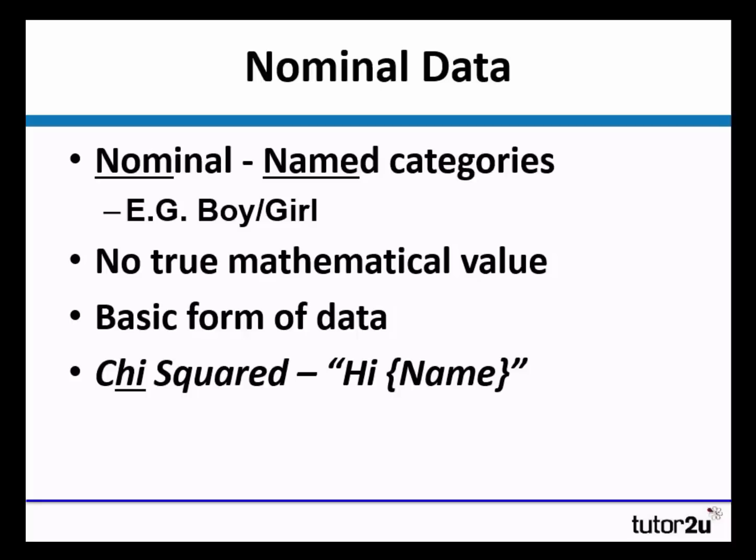Chi squared is an inferential statistical test which uses nominal data. And the way in which we remember this is that the word chi sounds like the word hi, and whenever you say hi, you say someone's name.